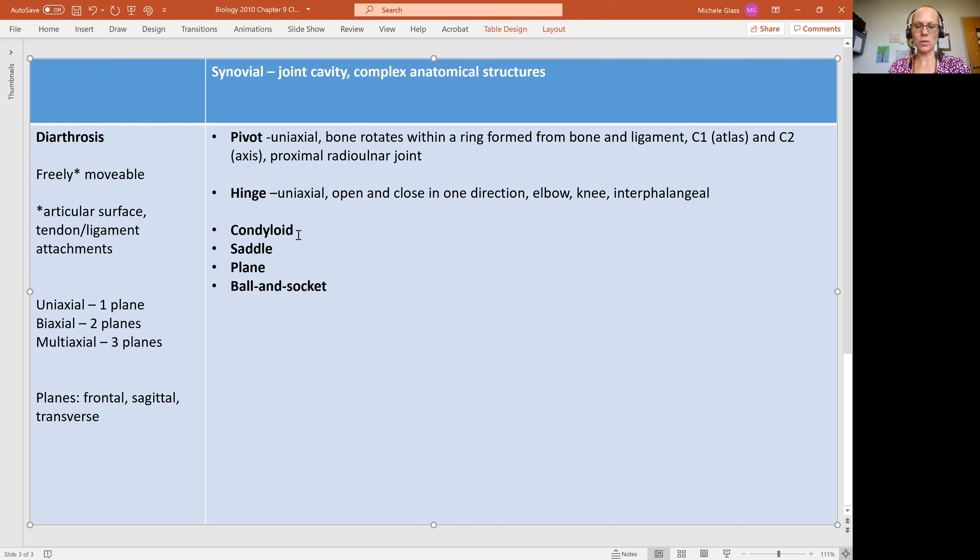All right, moving on to the condyloid. We are going to start seeing more movement. In the condyloid, we have a biaxial joint. This is going to be having a shallow depression on one end of the bone, connected to a rounded end of the other bone.